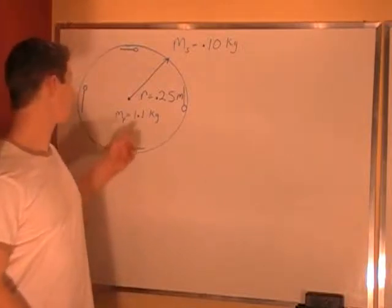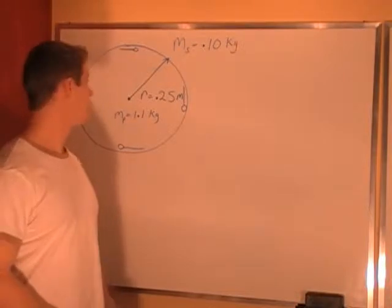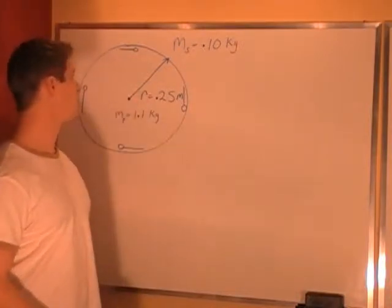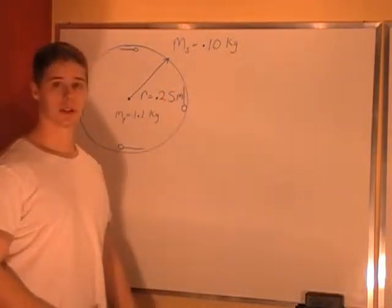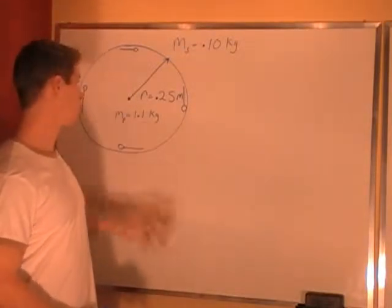We have a serving platter that weighs 1.1 kilograms and has a radius of 0.25 meters. It has four spoons placed around the edges that each have a mass of 0.1 kilograms. We're supposed to calculate the moment of inertia of this whole system.